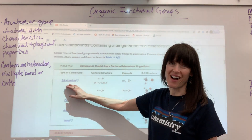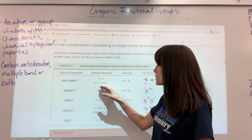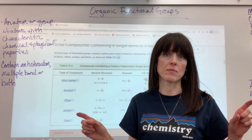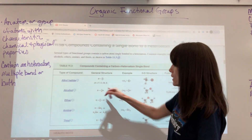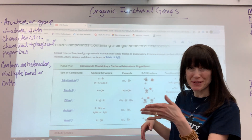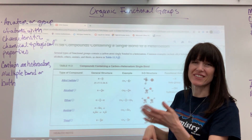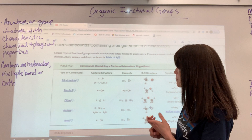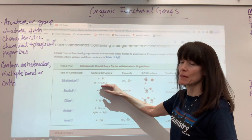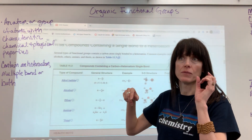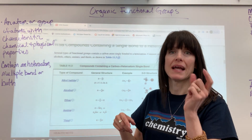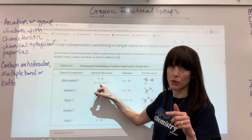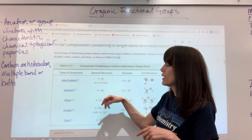First, we have alkyl halides. This simply means that you have a halogen attached to your organic molecule. Remember our halogens — those are going to be group 17: fluorine, chlorine, bromine, and iodine. For naming this, you just add the word ending in -o: fluoro, chloro, bromo, iodo.